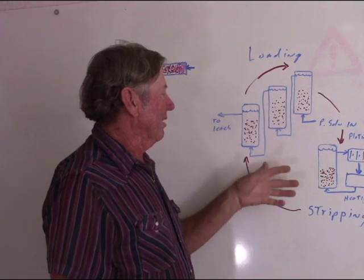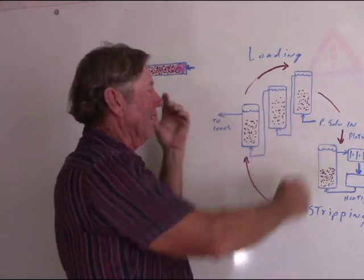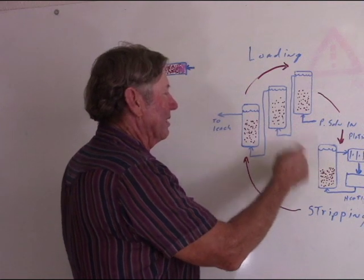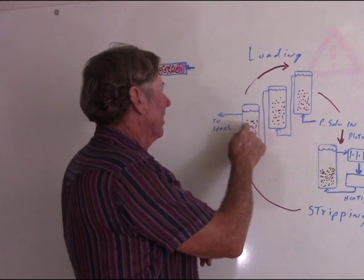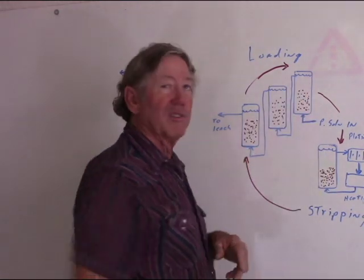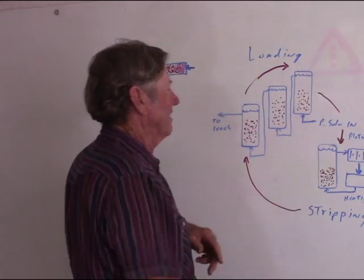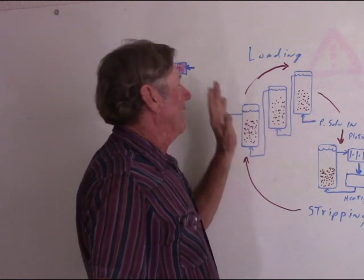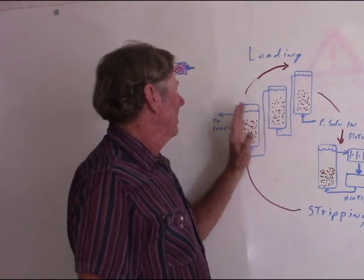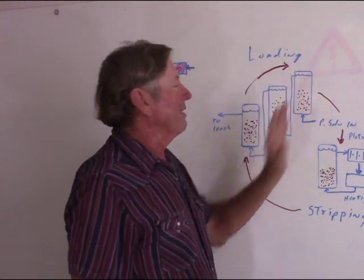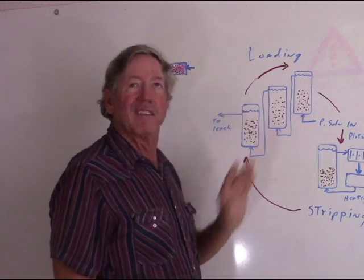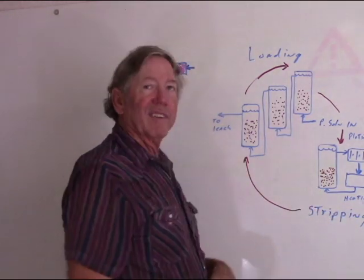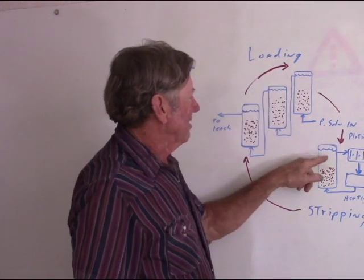Every two or three days we'd cycle the carbon columns one position. When you cycle, you take the stripped carbon from the last stripping cycle and move it into the first slot. The first slot moves to the second, second to the third, and the last column goes down to the stripping cycle. So each batch of carbon, each column, was being exposed to a solution more in keeping with its loading factor. The most concentrated loading would have the most concentrated solution. This allows you to build up the highest loading factor possible without losing too much out the end. Once loaded, it would be sent to a stripping circuit.